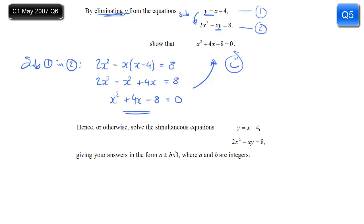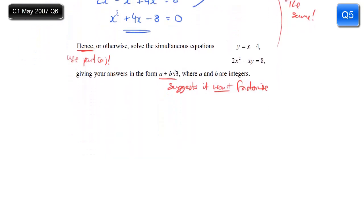Now part b. Hence or otherwise solve the simultaneous equations. Okay, now when you see hence, that means using what you've just done. So using, in this case, what we've done in part a. And we can see that these equations are, well, they're the same two equations that we've just used to get the quadratic in x. So that makes our job a lot easier. Also, before you start, note this. Give your answers in the form a plus or minus b root 3. If the answers are in this form, it means it won't factorize. So don't waste time trying to do that. We can use the formula or complete the square.